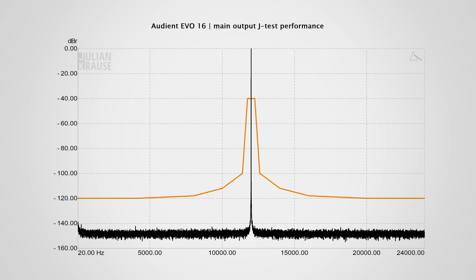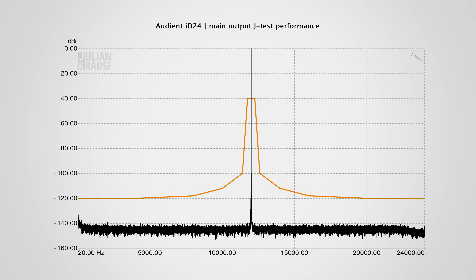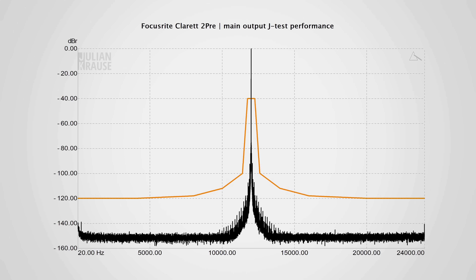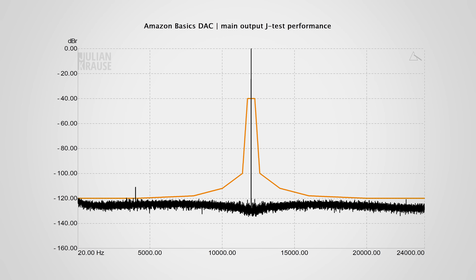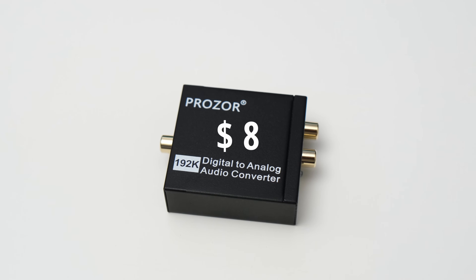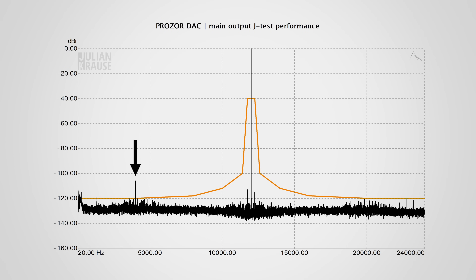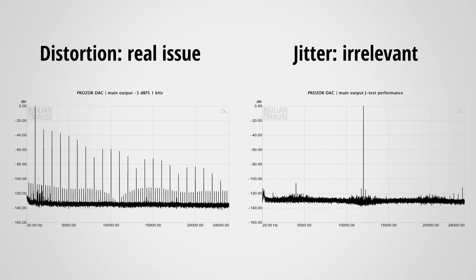You might still not be convinced, so let's step it up a notch. SPDIF has the potential to be more prone to jitter, so here are a few more devices. This time I am using a specific signal called JTEST, which is designed to be a worst case scenario. Again you can see that all these devices shown have near perfect jitter performance, with sidebands just at or below the threshold of audibility. This incredibly expensive $8 DAC shows hardly any signs of audible jitter. In other tests the DAC has a high noise floor and it distorts like crazy at high output levels — so this DAC definitely has some issues, but jitter is not one of them. Again, this is an $8 DAC that does not have any audible problems with jitter under worst case conditions. I rest my case.